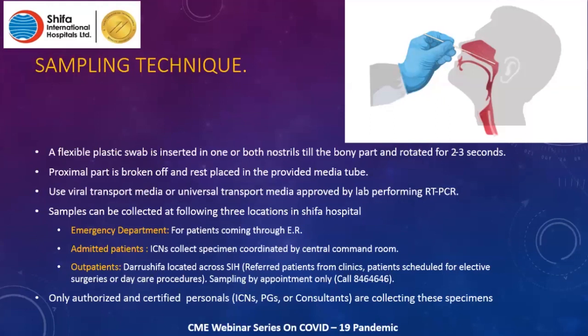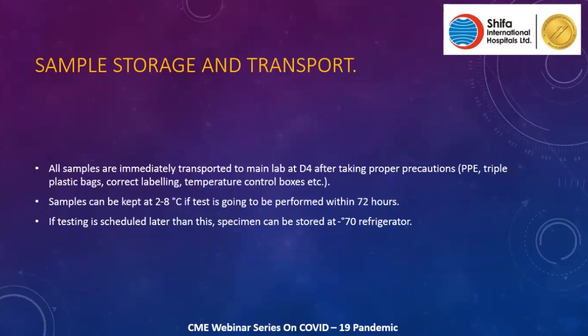The practice is to transport samples immediately to the main lab located at D4. Transport should be done under proper PPE with tubes placed in triple plastic bags with proper labeling in temperature-controlled boxes. Samples can be kept at two to eight degrees centigrade if the test is to be performed within 72 hours; if it will take longer, they can be stored at minus 70 degrees.